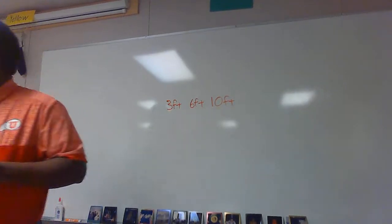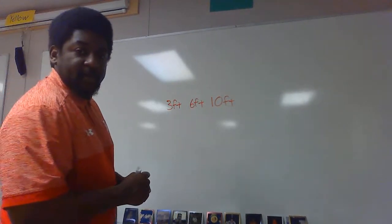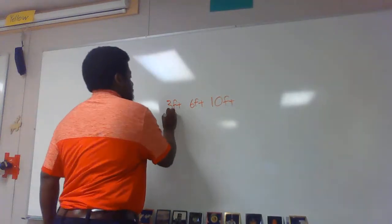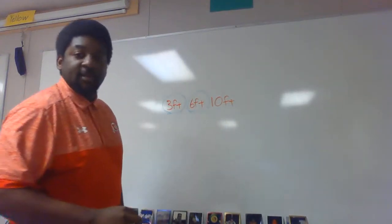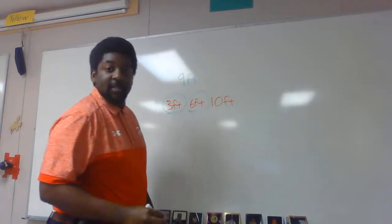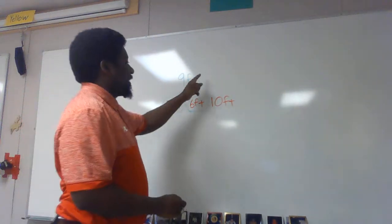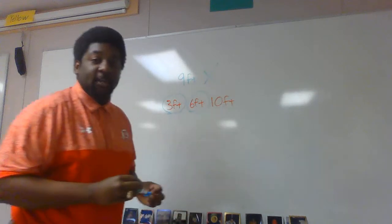All right, here's the second example. My two smallest sides for this one are 3 feet and 6 feet. 3 plus 6 gives me 9 feet. But 9 feet is not greater than 10 feet, so this does not make a triangle.